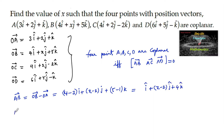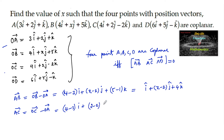And vector AC = OC - OA, which is equal to (4-3)i + (2-2)j + (-2-1)k, which gives AC = i + 0j - 3k.